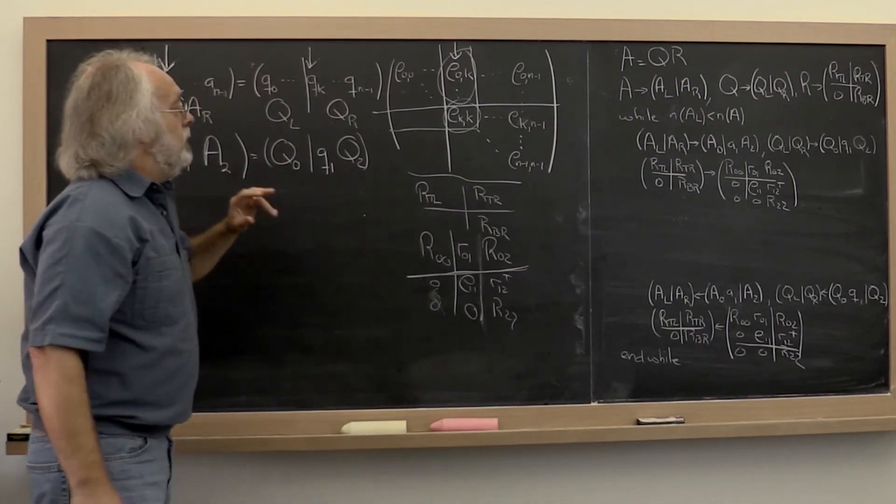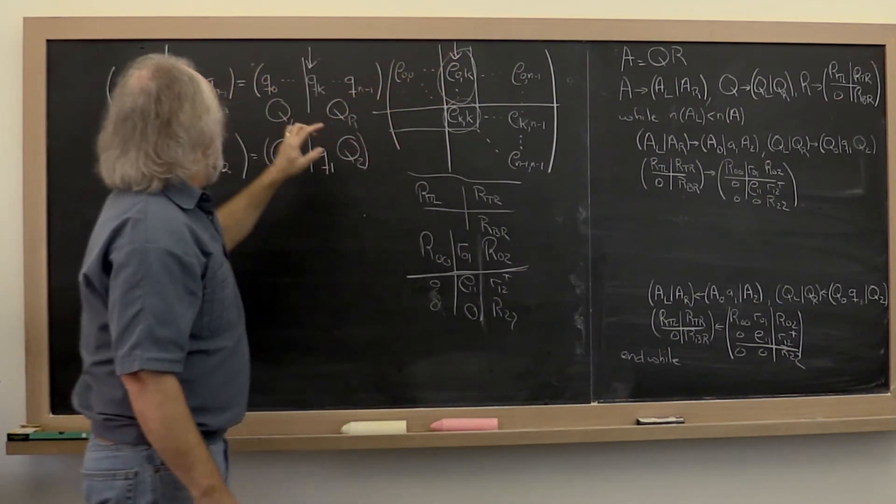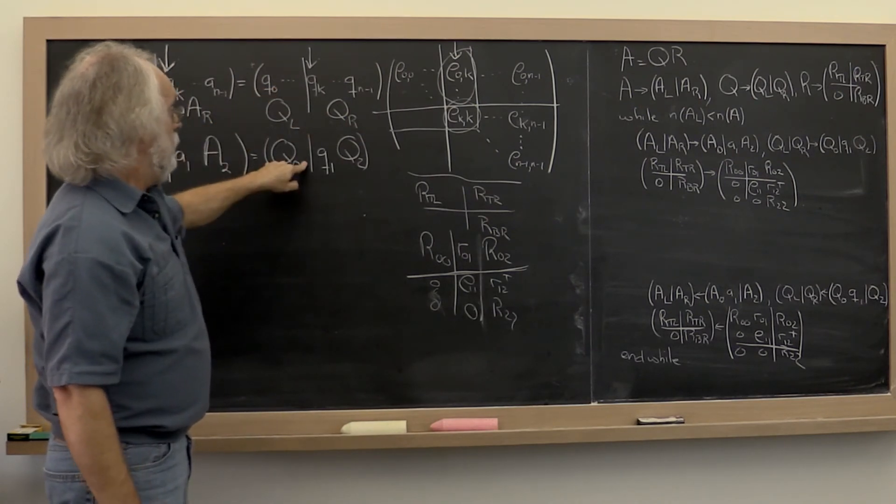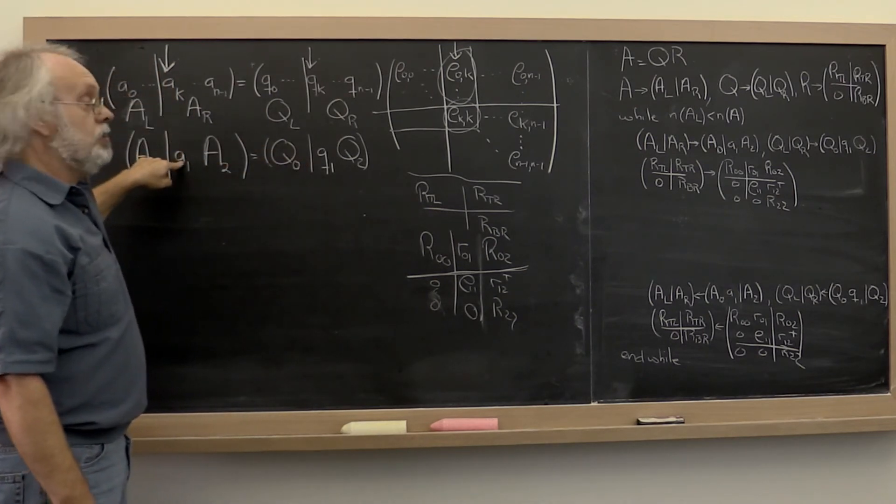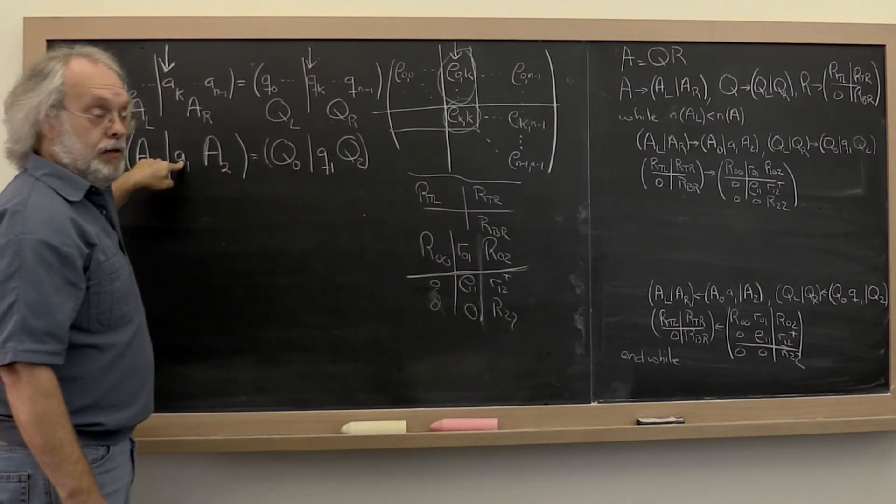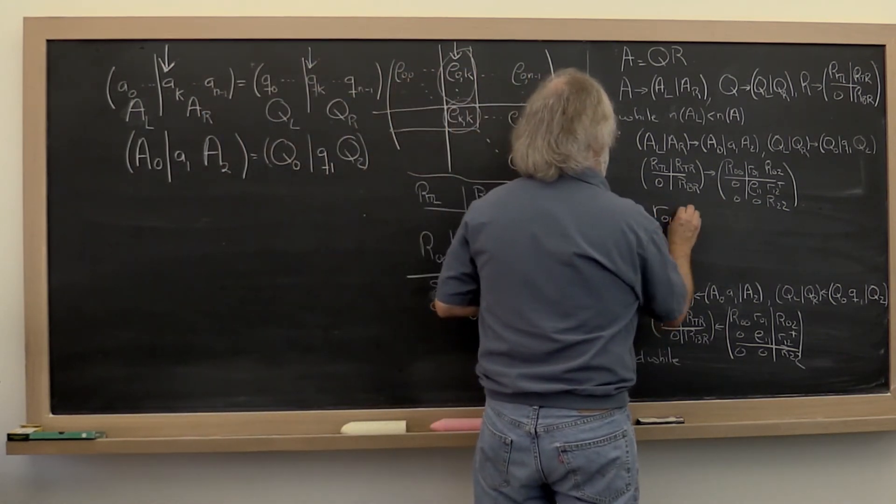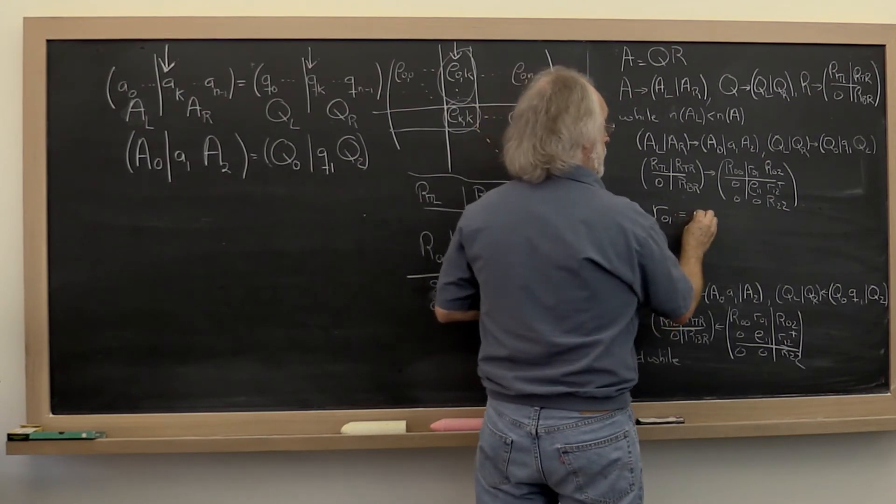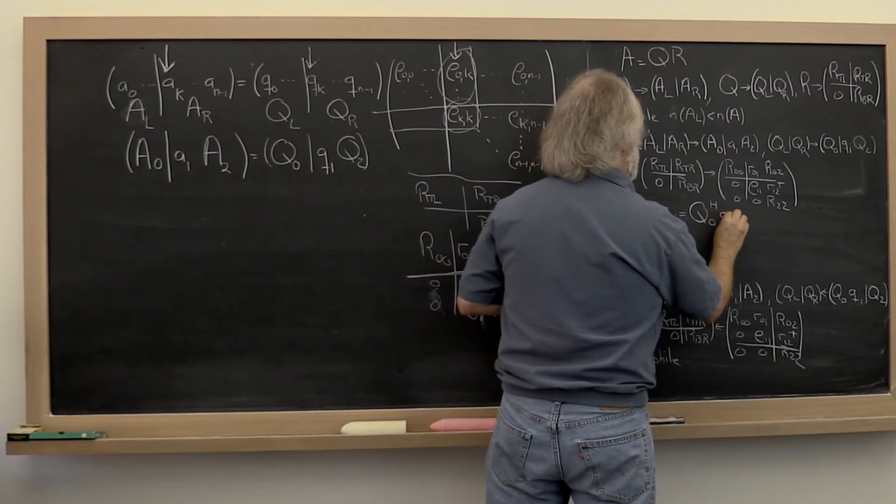And then we say, wait a minute. The way this was computed was really this part of the matrix, Q_0, Hermitian transpose times the current column of A. So R_{01}, those are all the coefficients, are computed as Q_0 Hermitian transpose times A_1.